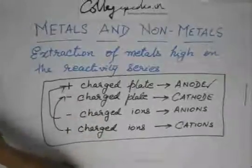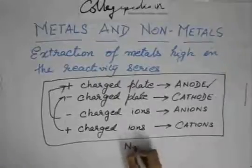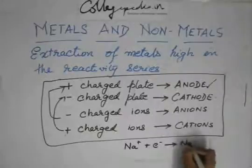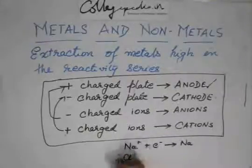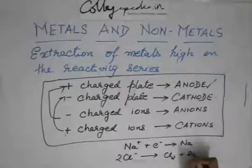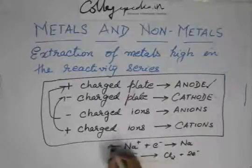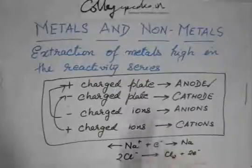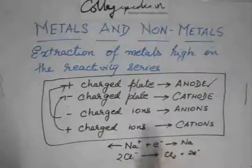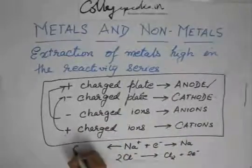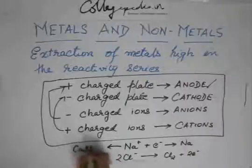The reaction I just wrote — Na⁺ + e⁻ → Na, and 2Cl⁻ → Cl₂ + 2e⁻ — the first reaction will occur where there is a supply of electrons. That means where there is negative charge, and the negatively charged plate is the cathode. So this reaction will take place at the cathode.